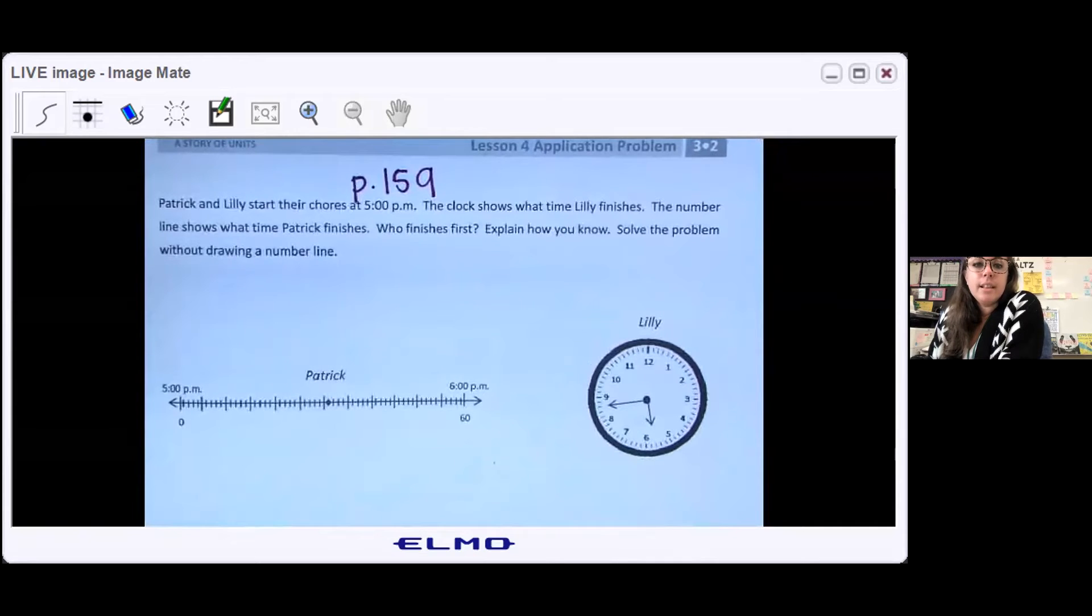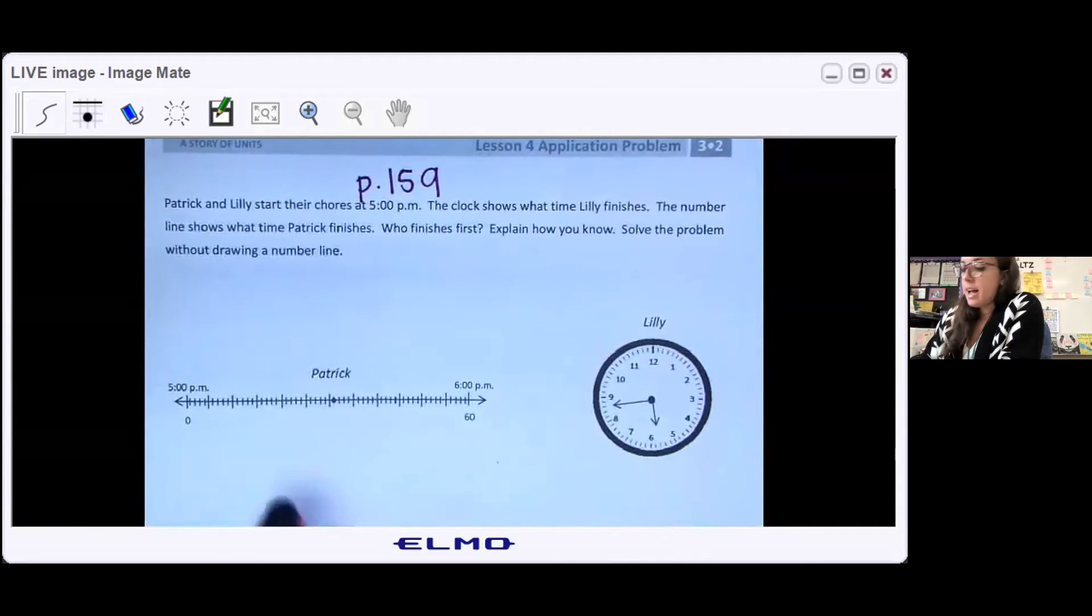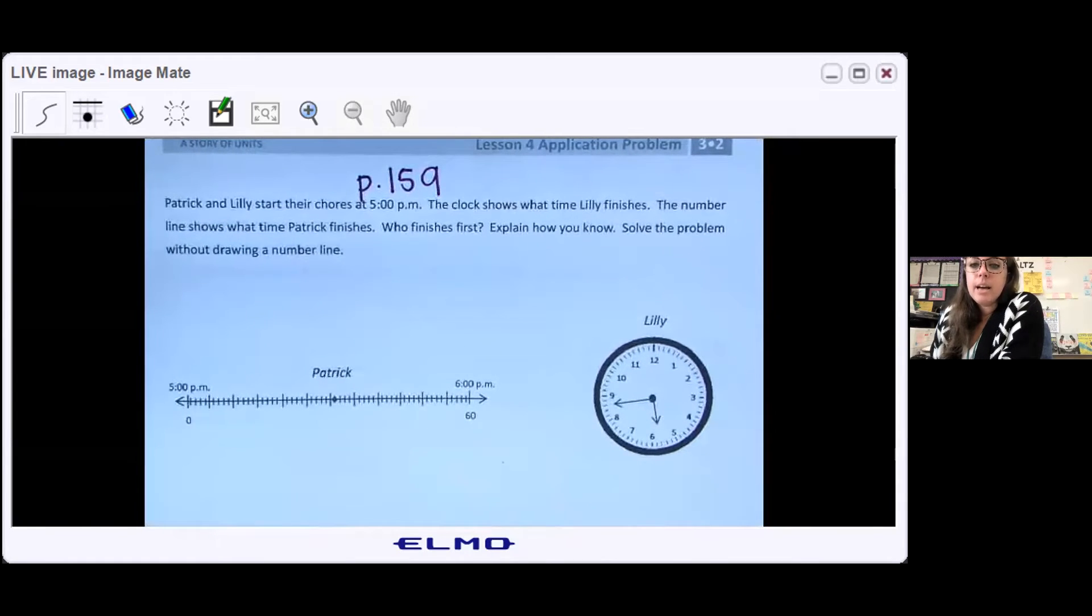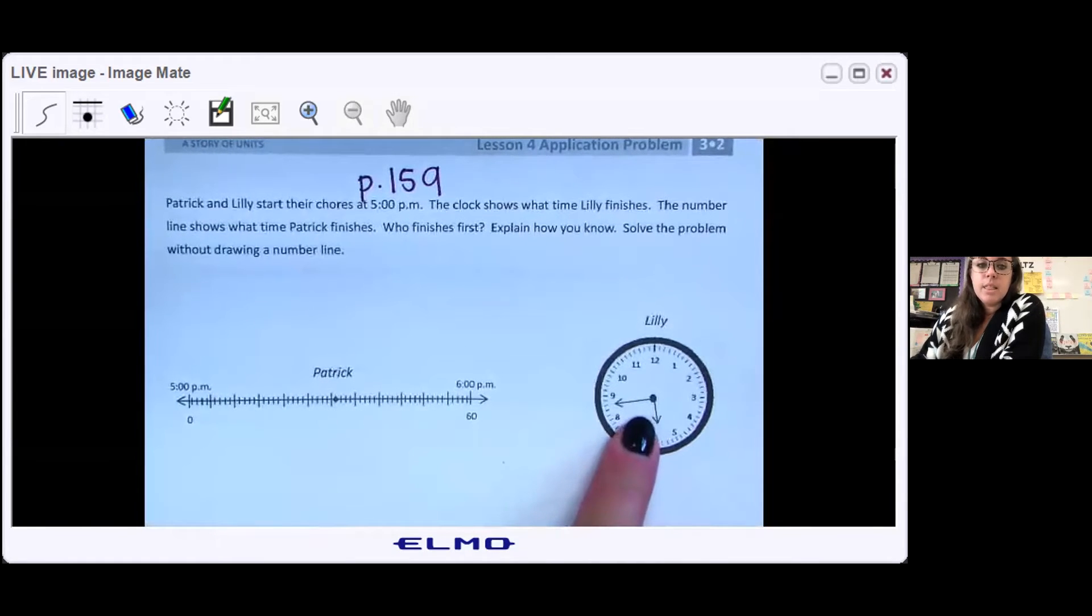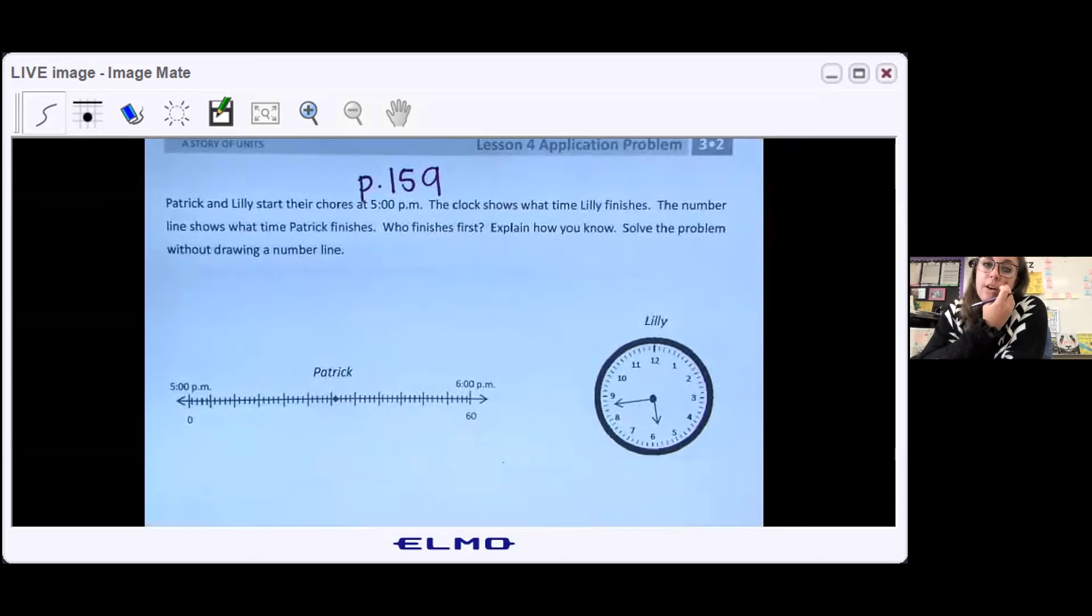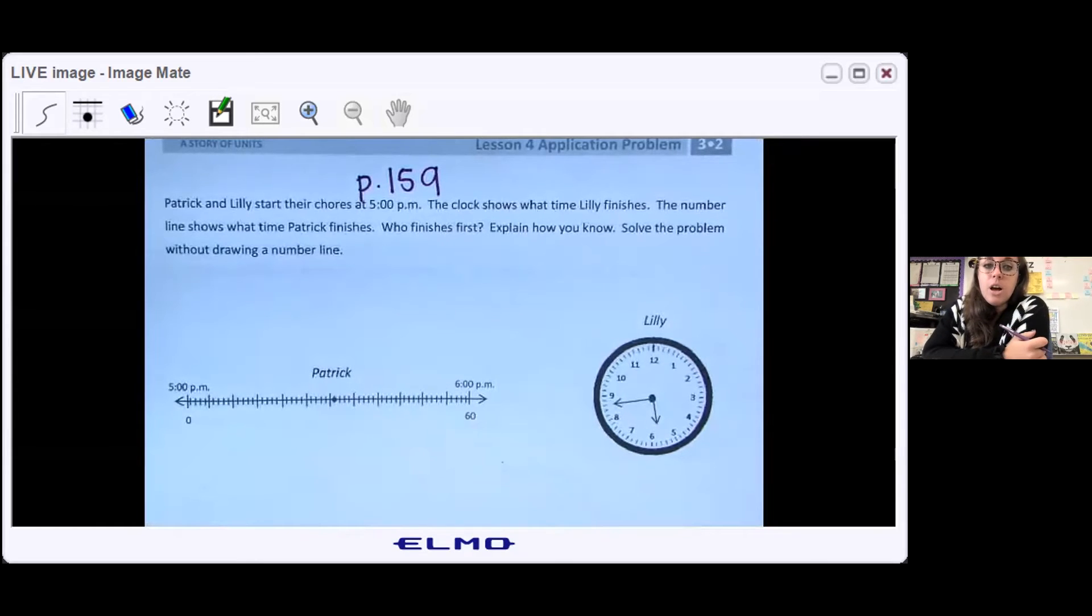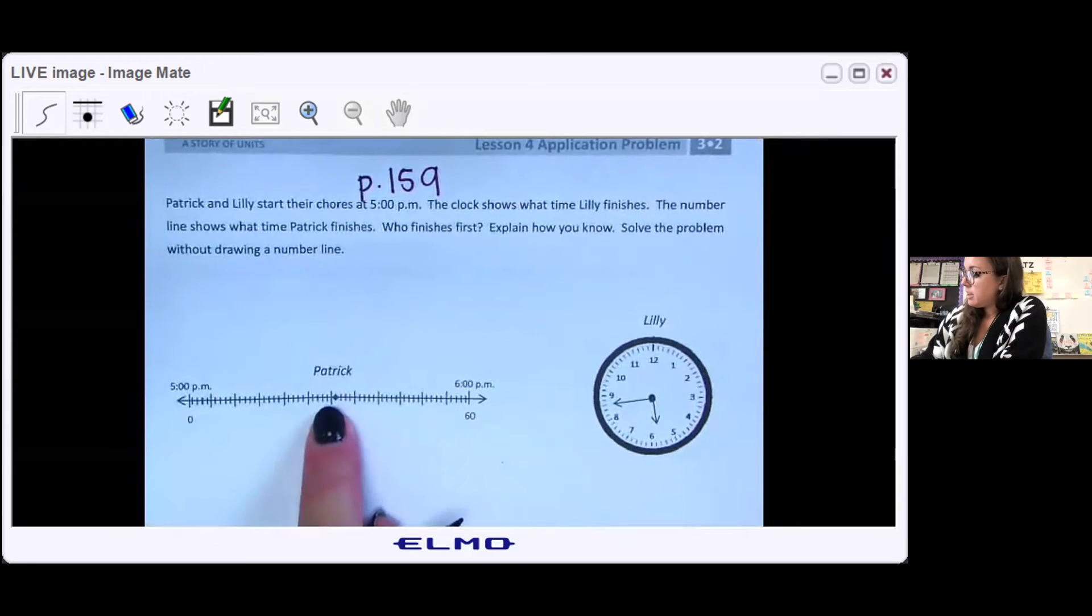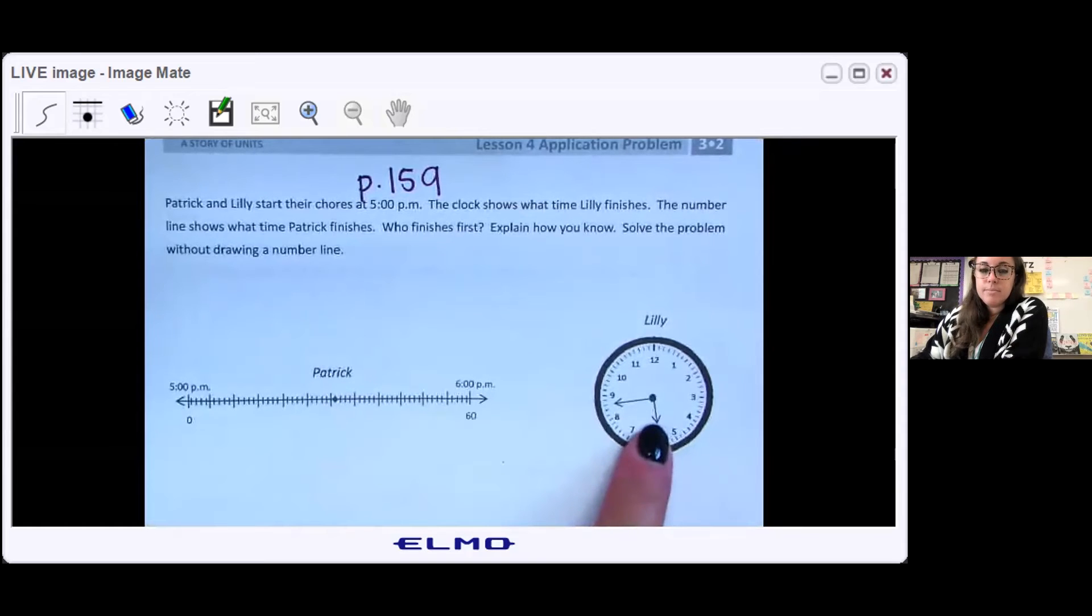So this problem says Patrick and Lily start their chores at five o'clock PM. I see the number line and it starts at five o'clock PM. The clock shows when Lily finishes. The number line shows when Patrick finishes. Who finishes first? Explain how you know. Solve the problem without drawing a number line. So we don't need to draw out a number line for this. I just need to determine who finished first, Patrick and Lily. So go ahead, pause the video. And I want you to decide who finished first, who had the earlier time.